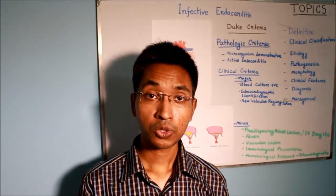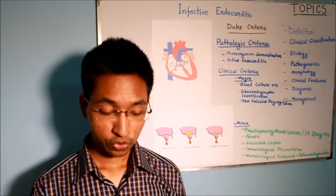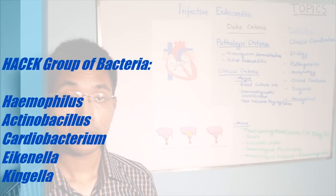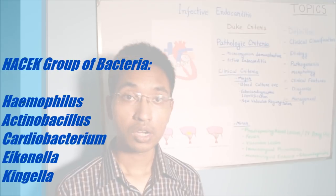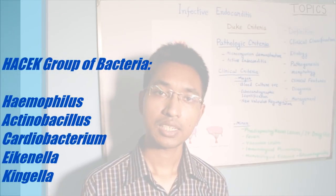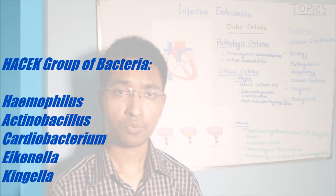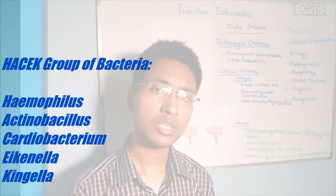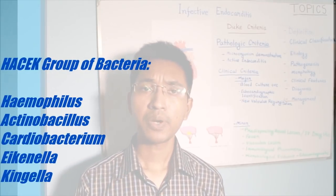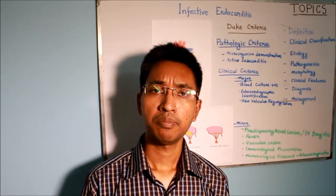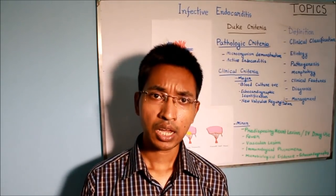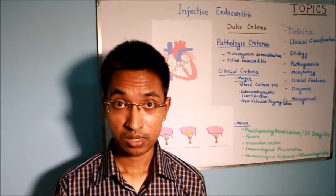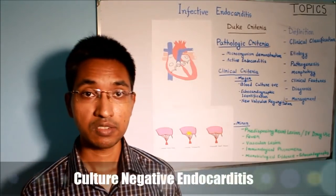In your textbook you will also see the HACEK group of bacteria: H for Haemophilus, A for Actinobacillus, C for Cardiobacterium, E for Eikenella, and K for Kingella. These are also responsible for infective endocarditis. In 10 percent of cases no microorganisms can be identified in blood culture, and that type is called culture-negative infective endocarditis.